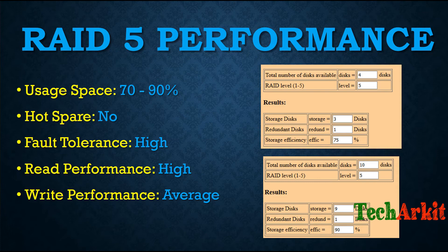Fault tolerance on RAID 5 is very high, and read performance is also very high. However, write performance is average. This is because while striping data across multiple drives, the RAID controller must calculate parity information on the fly before writing it to the hard drive. That parity calculation takes extra time, which limits write performance.